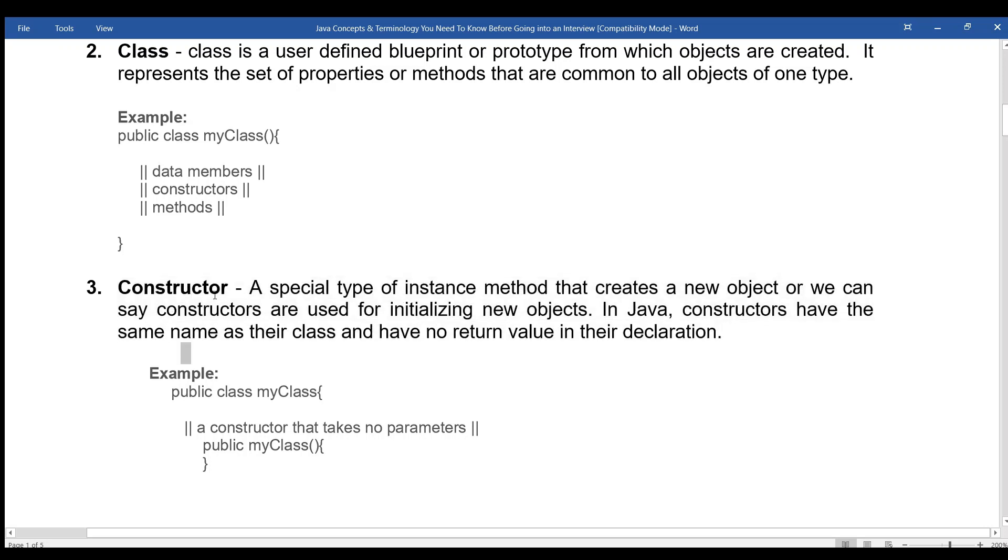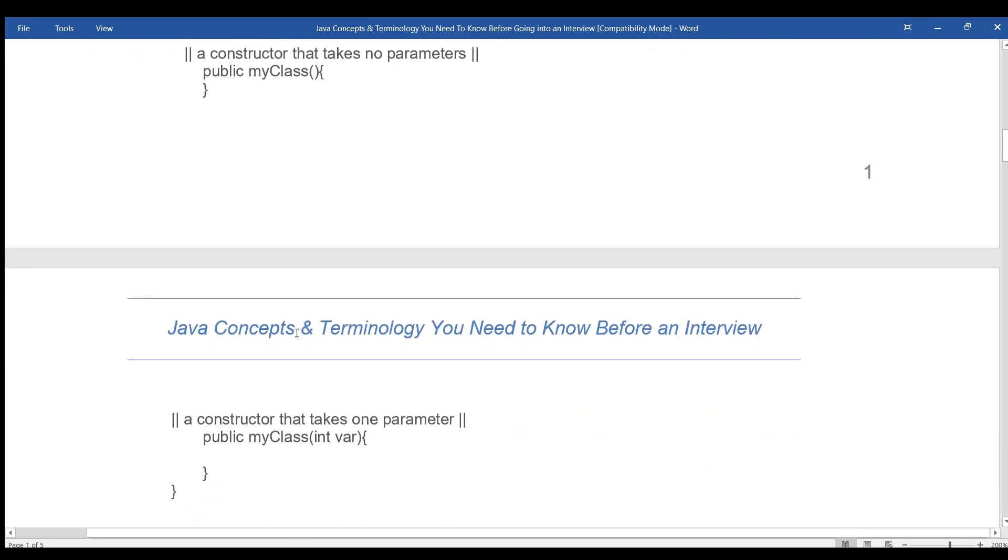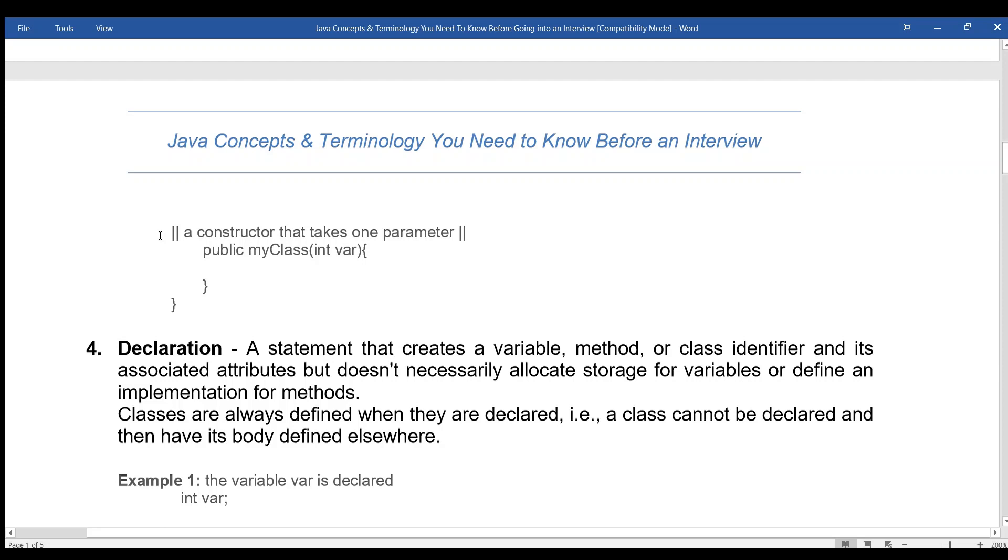Constructor: A special type of instance method that creates a new object, or we can say constructors are used for initializing new objects. In Java, constructors have the same name as their class and have no return value in their declaration. Example: public class myClass. A constructor that takes no parameters: public myClass. A constructor that takes one parameter: public myClass int var.